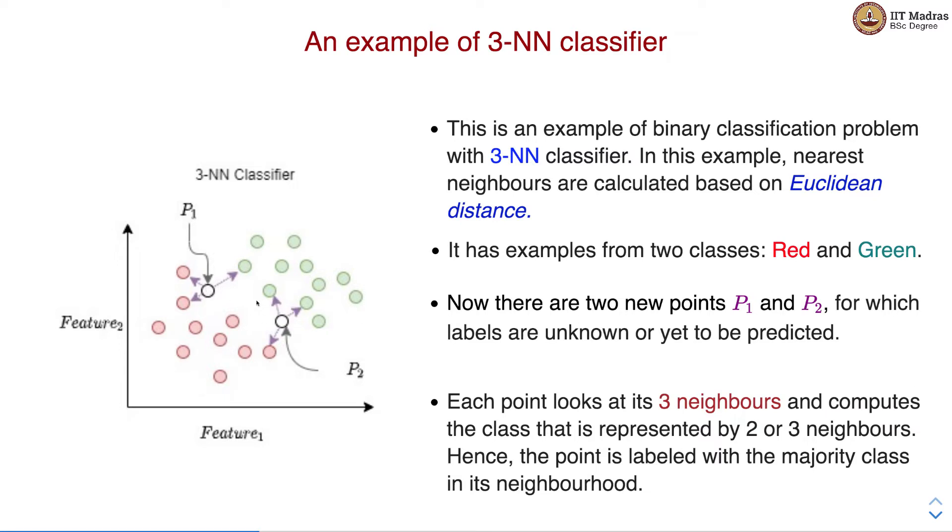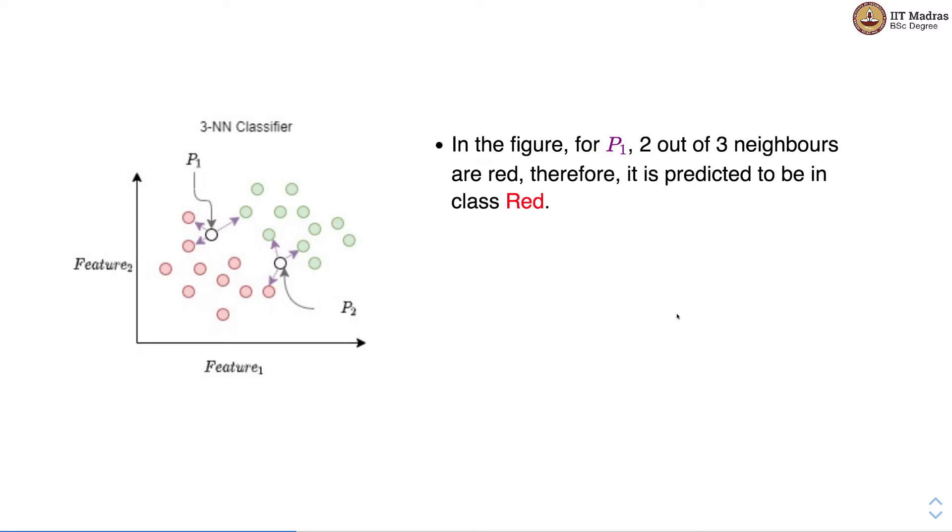So what we do here is for each of these points we look at its three nearest neighbors and compute the class that is represented by the majority. Hence the point is labeled with the majority class in its neighborhood. In the neighborhood of this particular point the red class is in majority, hence this point will be labeled as red. Whereas for point p2, the green class is in majority in its neighborhood, and hence p2 will be labeled as green. For p1, two of three neighbors are red therefore it is predicted to be in class red, and for p2, two of its three nearest neighbors are green therefore it is predicted to be in class green.